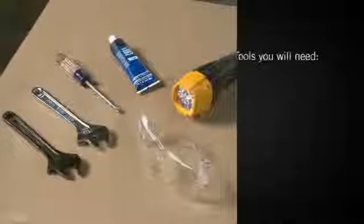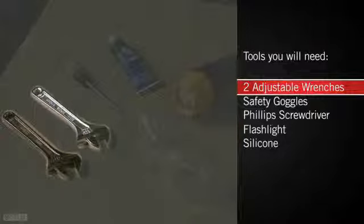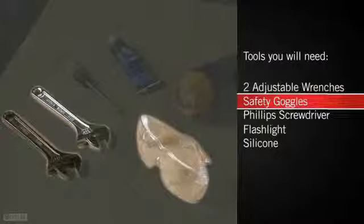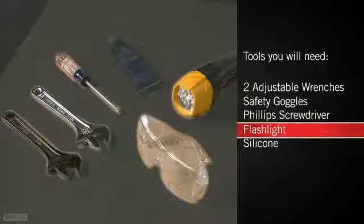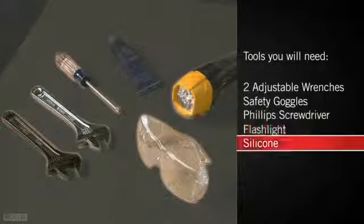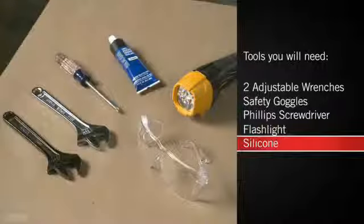Before you begin, you'll want to assemble the tools you'll need for the job, like two adjustable wrenches, safety goggles, a Phillips screwdriver, and you may want to have a flashlight handy to help you see under the sink. You may also need silicone if the surface of your counter or sink is uneven.